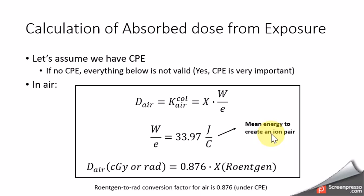So in air, after the calculation, you will have the absorbed dose in air, either in centigrade or rad, equals 0.876 multiplied by the exposure in the unit of Roentgen. And this 0.876 is also called the Roentgen-to-rad conversion factor for air.